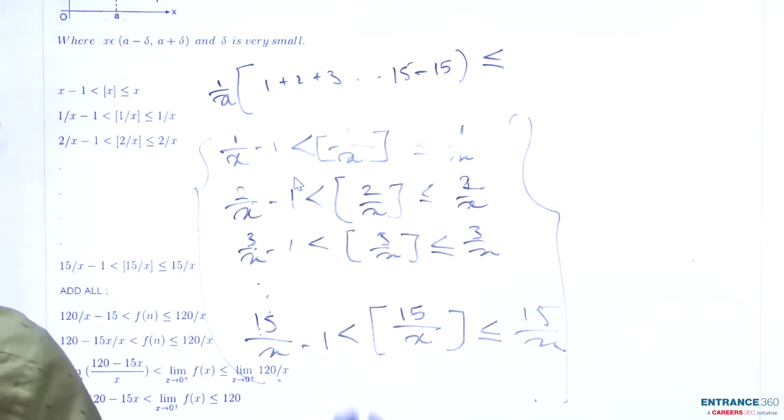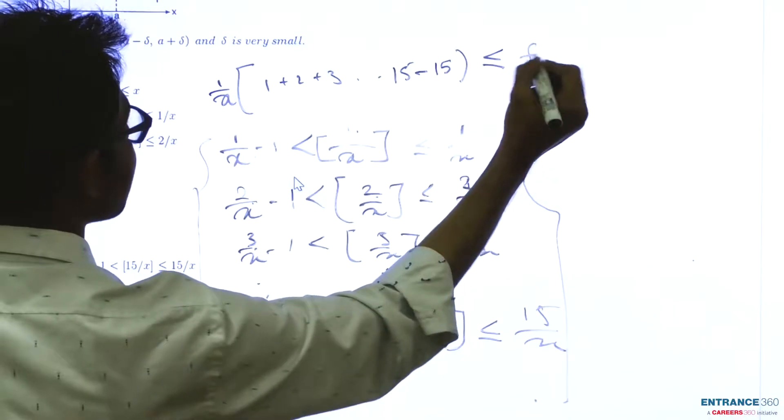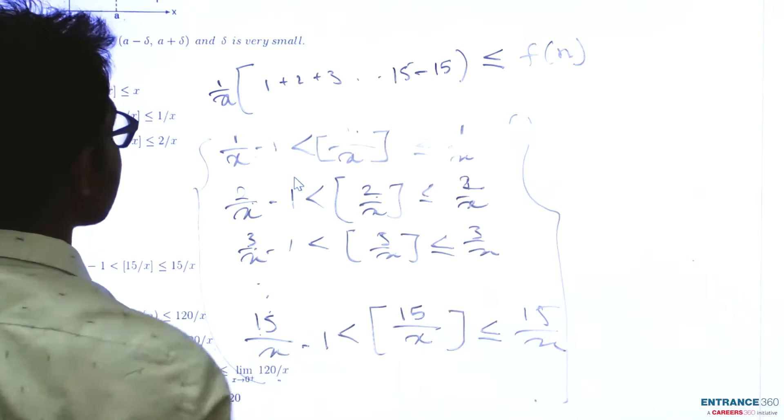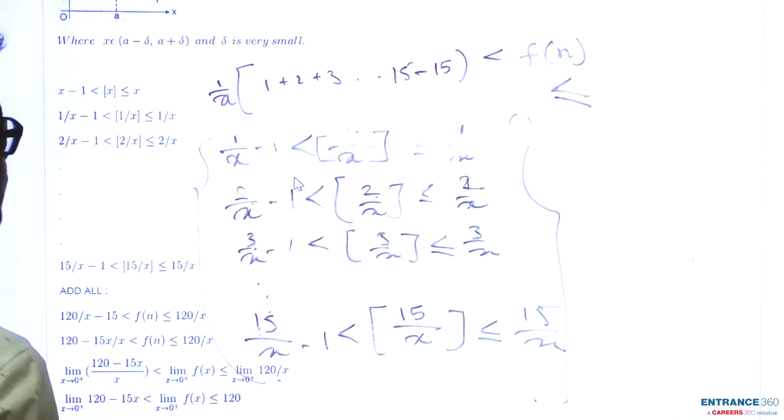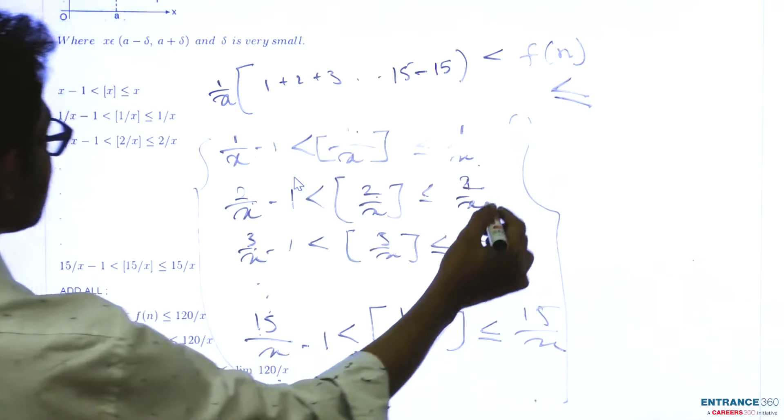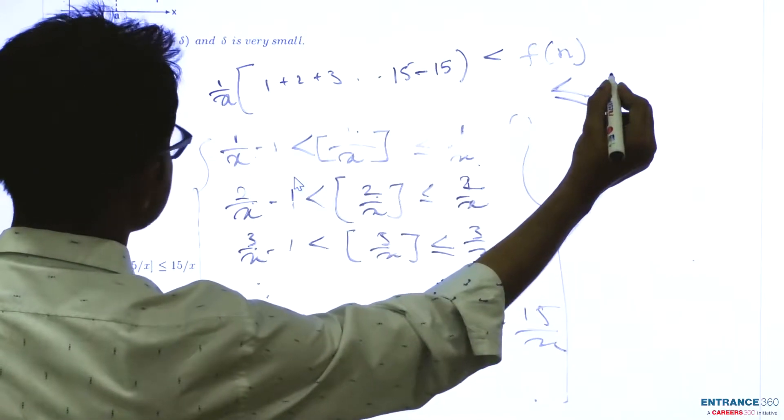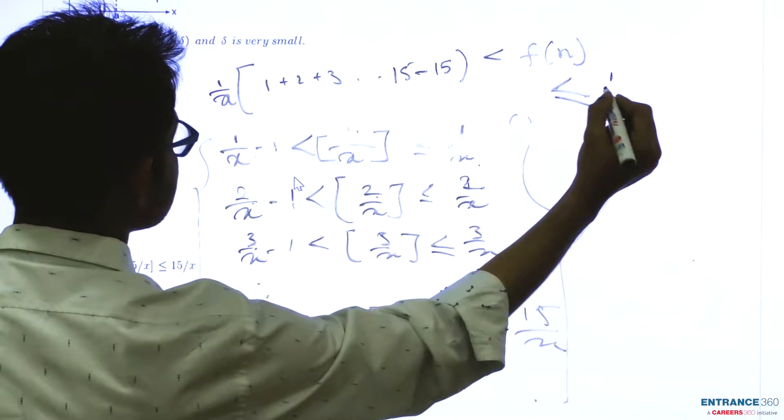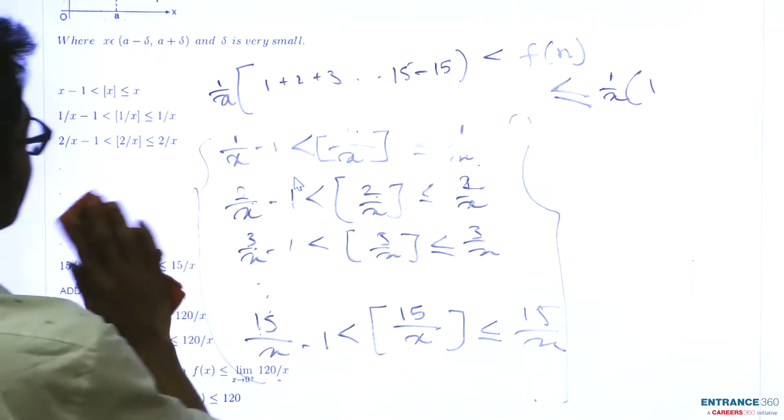This is less than or equal to f(x), which is less than or equal to 1/x plus 2/x plus 3/x. Similarly, this will be 1/x common and the sum 1 plus 2 plus 3 up to 15.